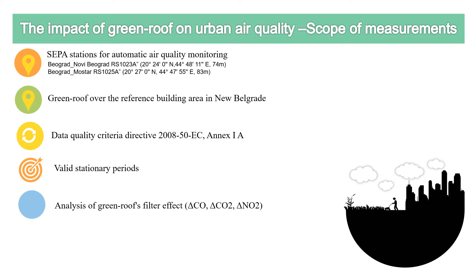All data was collected over an analyzed period covering 61 stationary environmental periods from September to October. This follows the directive Annex 1 data quality criteria for the gases carbon monoxide, carbon dioxide, and nitrogen dioxide, which requires a minimum period of 50% of one stationary environmental period within an 8-hour scope. The minimum criteria for quality measurement is a minimum of 4 hours of one stationary environmental period, and this was applied in the analysis of the green roof filter effect.